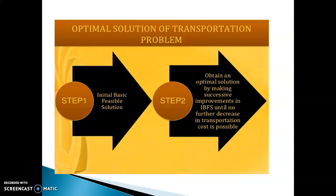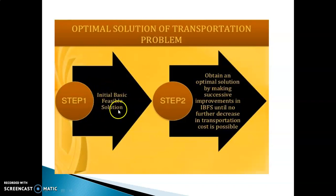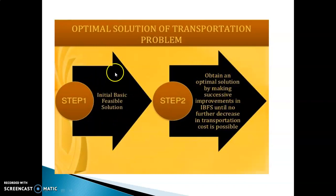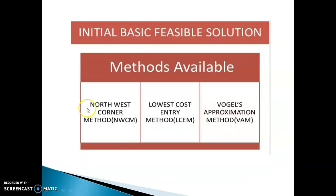Now how do we solve the transportation problem to get the optimum solution — that is, the minimum transportation cost? We need to go through two stages. In stage 1, we find the initial basic feasible solution. In stage 2, we find the optimum solution. For getting the initial basic feasible solution, we have three methods: the Northwest Corner Method, the Lowest Cost Method (Matrix Minima Method), and Vogel's Approximation Method.